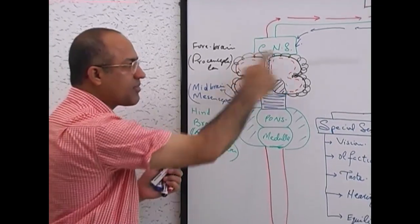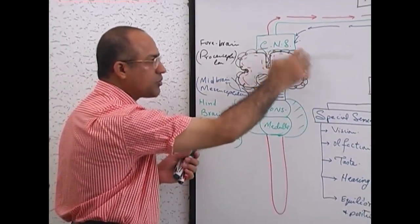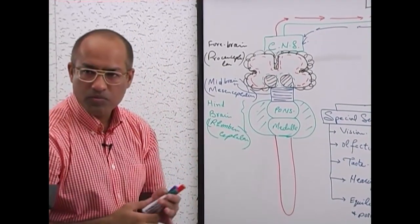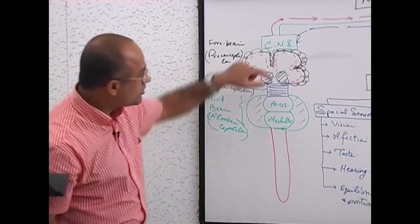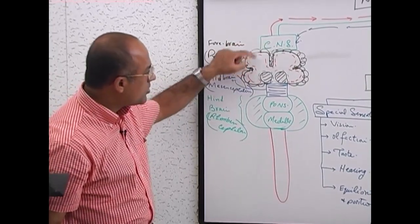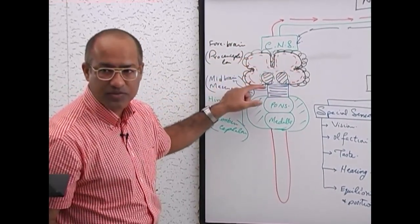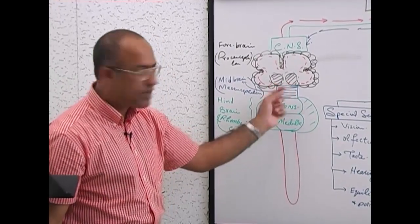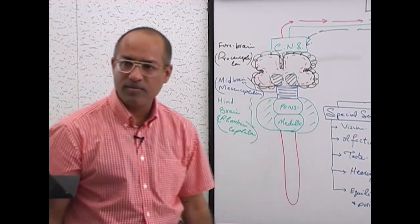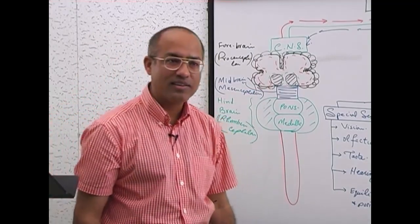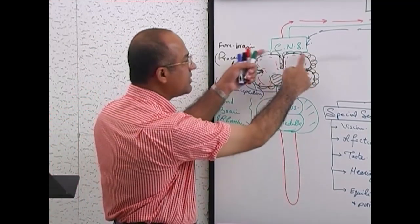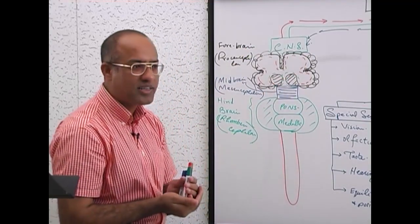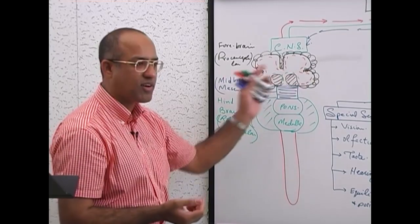Out of prosencephalon, there is an outer superficial area and deep structures. The superficial structures of the prosencephalon are also called cerebral hemispheres. Now, the outer structures are called telencephalon, and the deeper structures are called diencephalon.